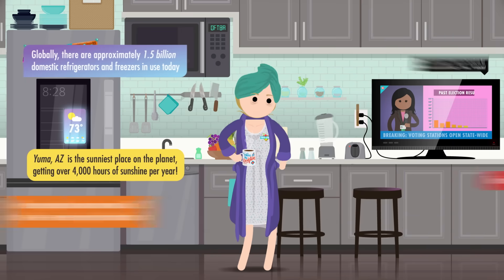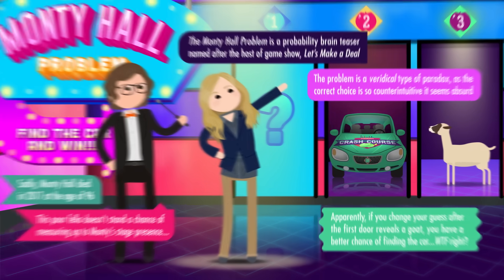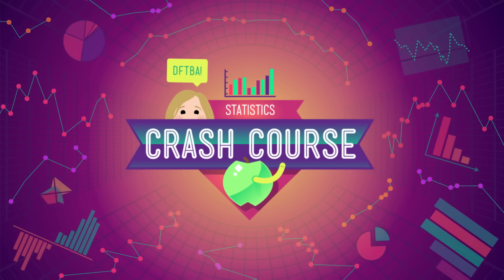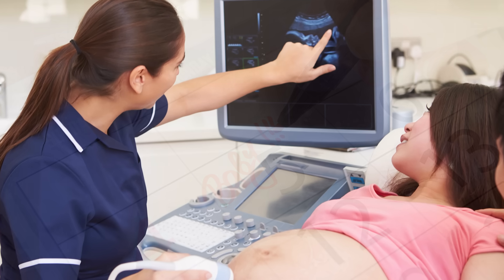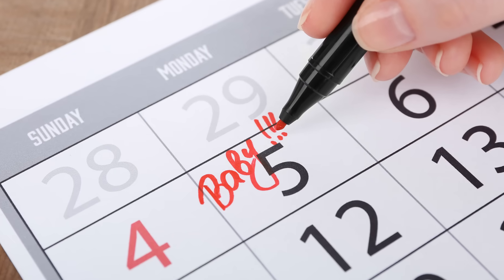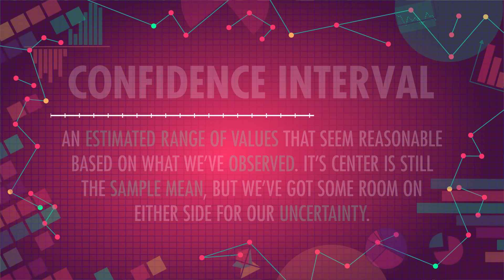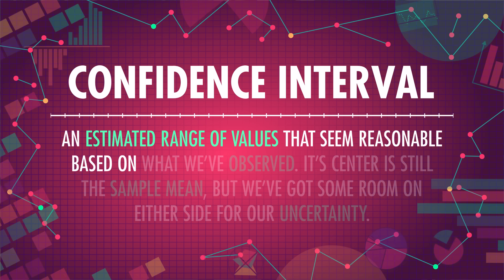Let's talk about confidence intervals. It's useful to give pregnant mothers a due date when their children will most likely be born, but it might be more accurate to say that doctors expect the baby to come around the due date, not exactly on it. And when pollsters claim that a candidate will get around 30% of the vote, plus or minus 2%, we can represent the "around" part with a confidence interval. A confidence interval is an estimated range of values that seem reasonable based on what we've observed.